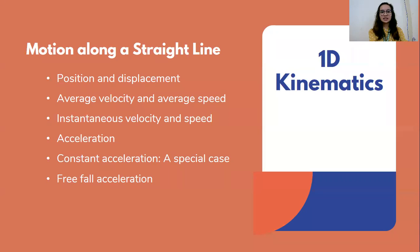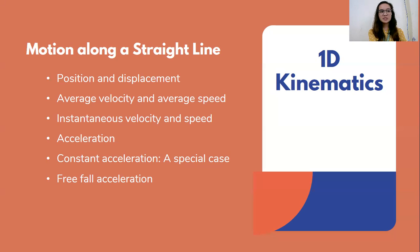Motion along a straight line — when we say one dimension, the motion is along a straight line. The path traveled by the object forms a straight line. We have different variables to talk about: position and displacement, average velocity and average speed, instantaneous velocity and speed, acceleration, and free-fall acceleration. But in this lesson, we will focus first on position, distance, and displacement.